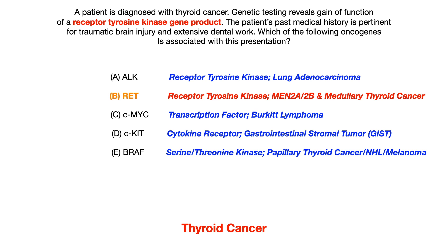Choice D, C-kit, is a cytokine receptor — it's not a receptor tyrosine kinase, so you could eliminate it on that basis. Or you could have known that it's associated with gastrointestinal stromal tumor, or GIST, which is not thyroid cancer. So again, two possibilities to eliminate choice D.